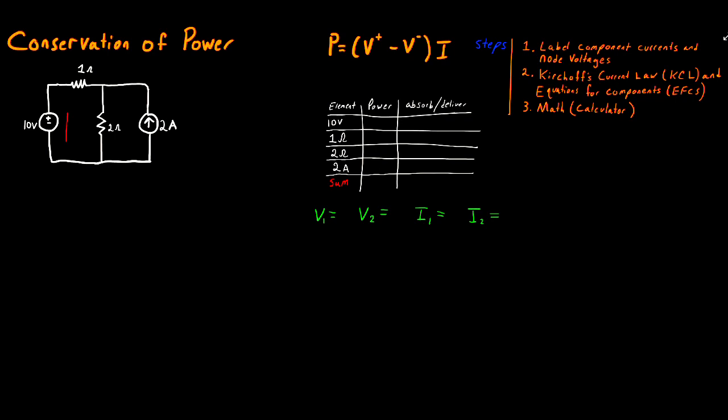Let's begin with labeling this first current. I'm going to call this I1 for both of these components because there's nowhere for that current to split off. If the current is flowing through this wire, it can't jump out of the wire and go somewhere else — it has to continue on through that 1 ohm resistor. However, at the 2 ohm resistor, I do need to define a new current, so let's call this I2. The direction I'm choosing for these current values is completely arbitrary — you can make I2 point upward, and that's totally fine, as long as you're consistent.